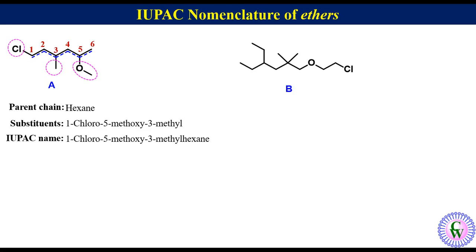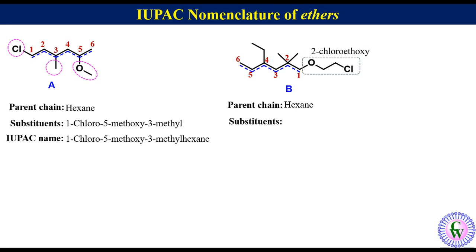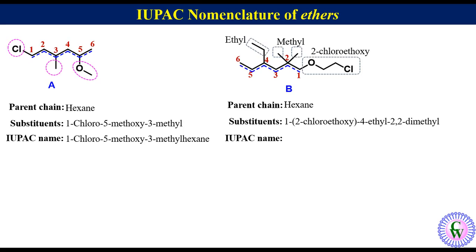Compound B: in this molecule the parent chain is also a six-carbon chain called hexane, numbered one through six. There are four substituents: a 2-chloroethoxy at C1, two methyl groups at C2, and an ethyl group at C4. Written in alphabetical order: 1-(2-chloroethoxy), 4-ethyl, 2,2-dimethyl. Thus the IUPAC name of this molecule will be 1-(2-chloroethoxy)-4-ethyl-2,2-dimethylhexane.